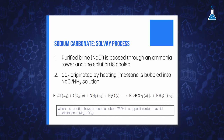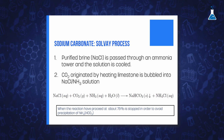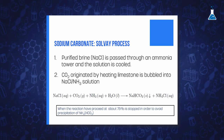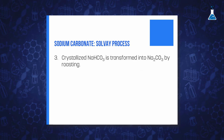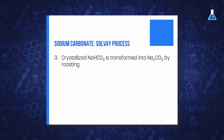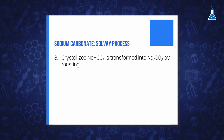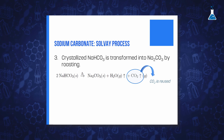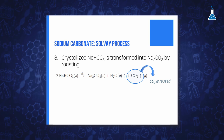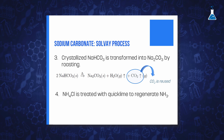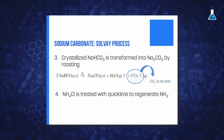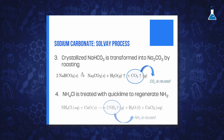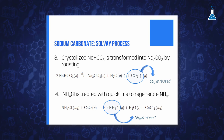The reaction is stopped at about 75% completion in order to avoid the precipitation of ammonium bicarbonate. The sodium bicarbonate salt crystallizes from the mixture and is converted to sodium carbonate by roasting, liberating carbon dioxide that can be reused in the process. Additionally, the ammonium chloride solution is treated with quicklime remaining from the calcination of the limestone, and the liberated ammonia is also reused in the process.